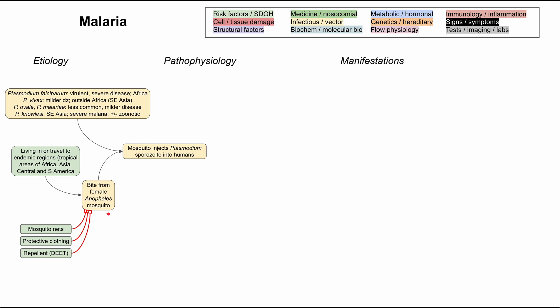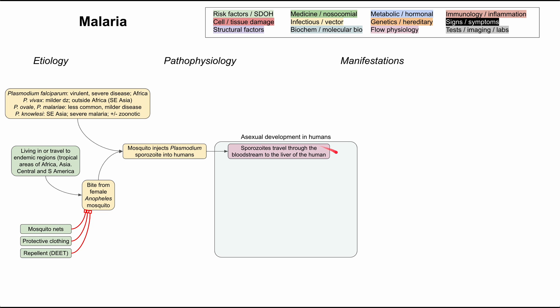After being bitten by a mosquito containing the Plasmodium parasite, Plasmodium sporozoites are injected into the human and the asexual development phase of the life cycle begins. The sporozoites travel through the bloodstream to the liver, where they enter hepatocytes — the liver cells — and multiply asexually, forming schizonts containing thousands of merozoites. The merozoites then enter red blood cells.